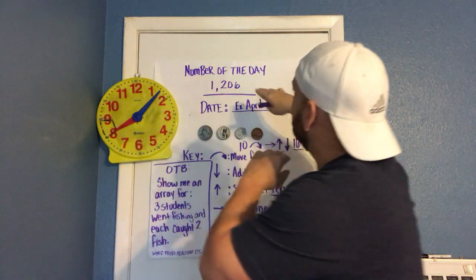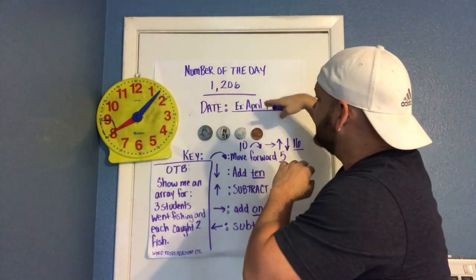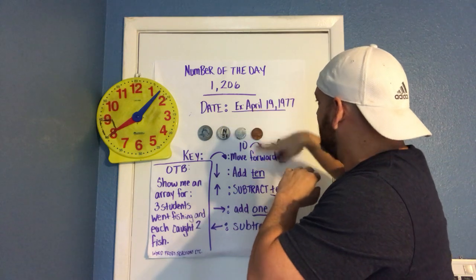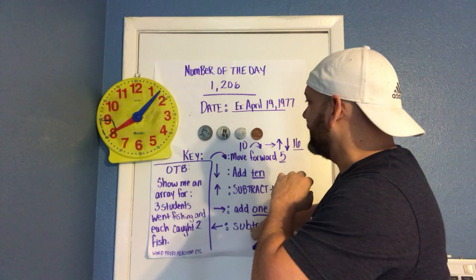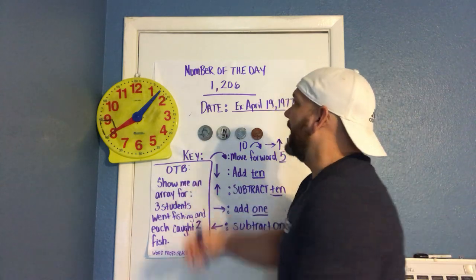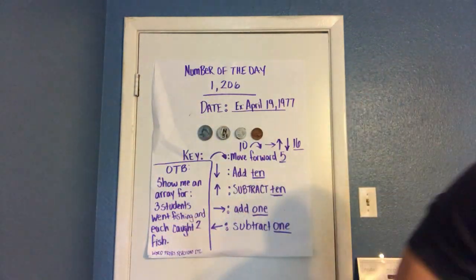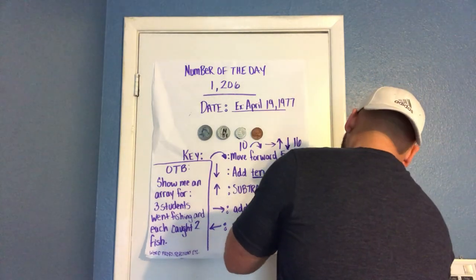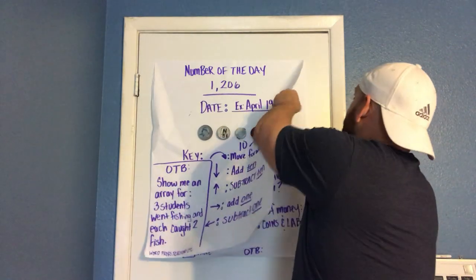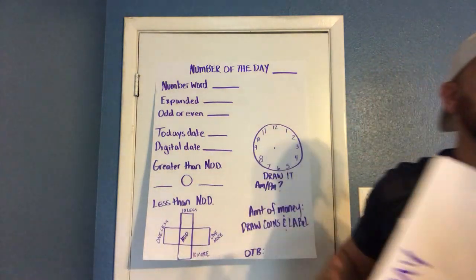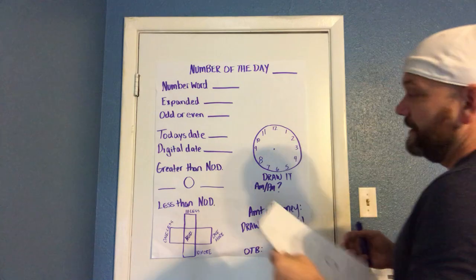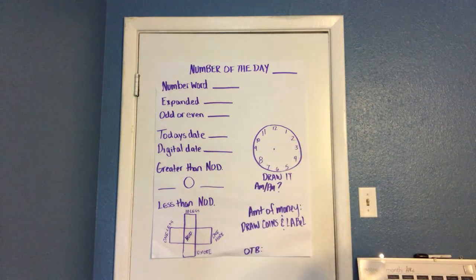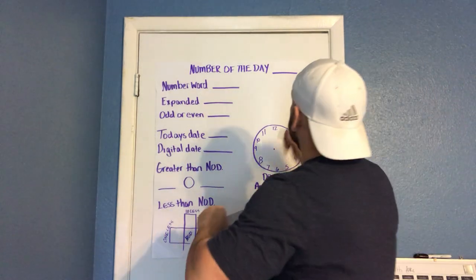So that's just something I make up. Then the clock, I have to set the clock each day. So I have the clock, I have the number of the day, I have the date, I set some money up, and then I pick a number for this pattern, and then I pick something for on the back. Now let me show you quickly kind of how the kids would run through it. I'm going to do this rather quick, so the number that I already picked was 1206.